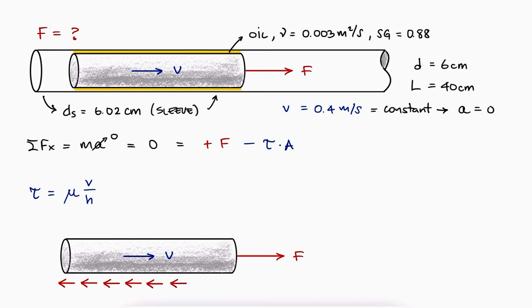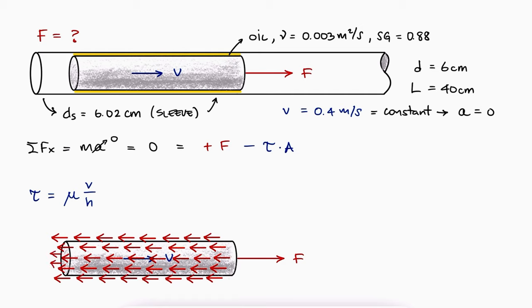This shear stress is affecting the entire outer surface of the shaft. The reason for this is that the contact area between the shaft and the fluid is the cylindrical area of the shaft.